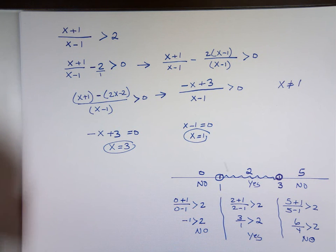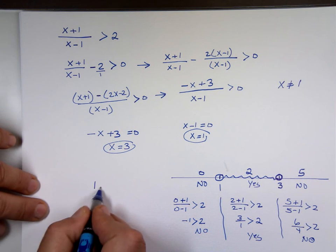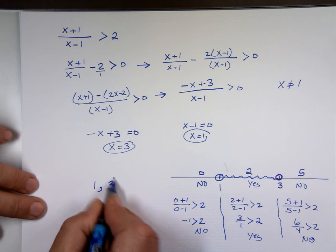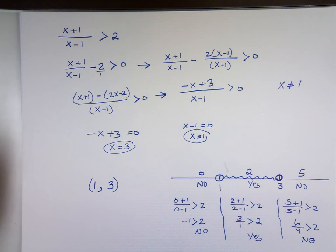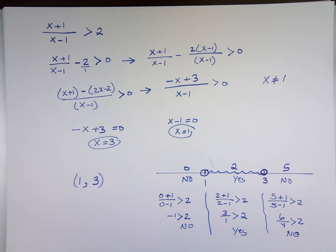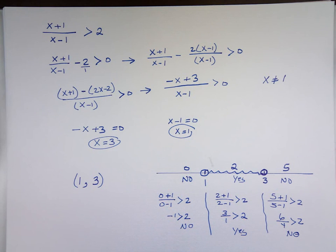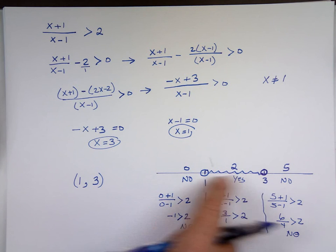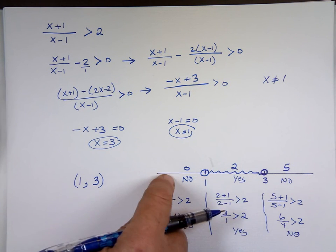So the answer is from 1 to 3, written as the interval (1, 3). That's how we handle non-linear inequalities: move everything to one side, factor to get the critical values, and if it's a fraction, find what makes the top zero and the bottom zero. Then use test points in each segment to determine yes or no.